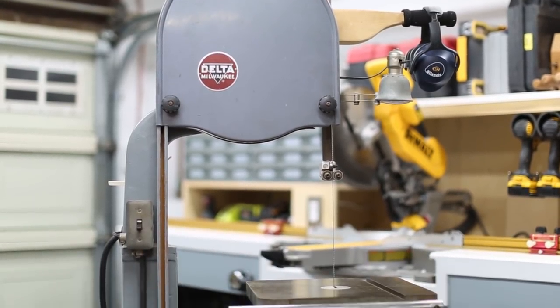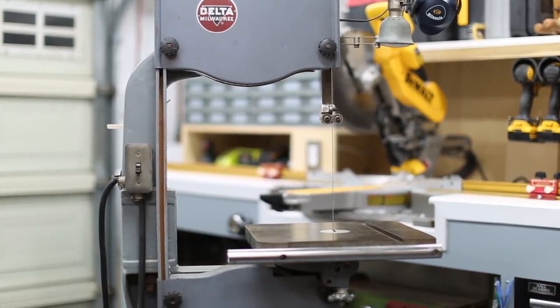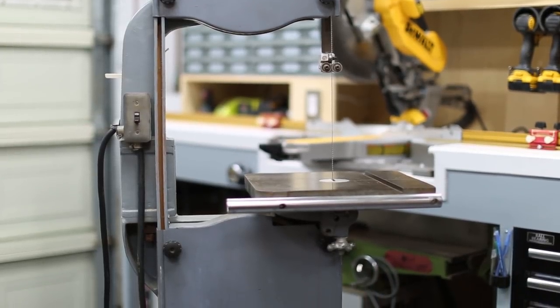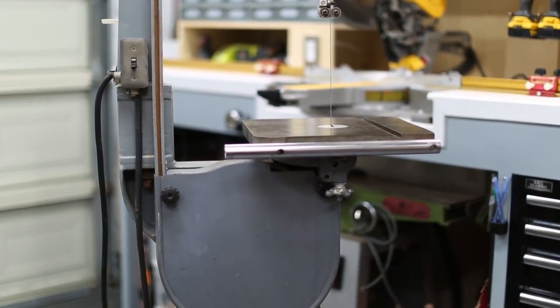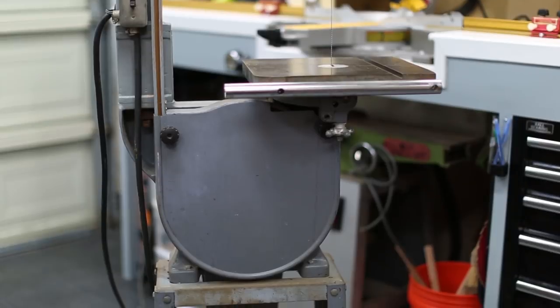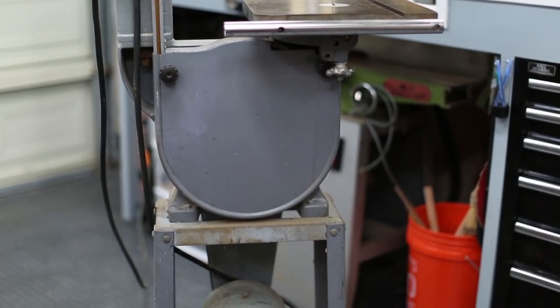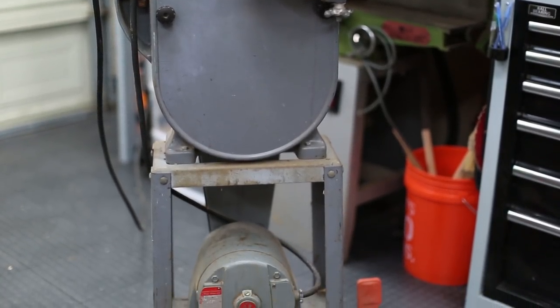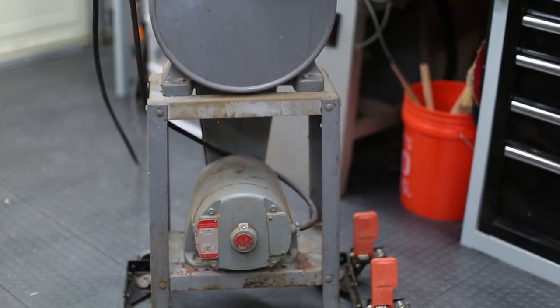I've got a fairly typical bandsaw that you see in a lot of woodshops. It's a vintage Delta Milwaukee and honestly it's a great saw. It's got a pretty powerful motor and a riser block and a few other aftermarket upgrades, and really the only thing that's missing is dust collection.